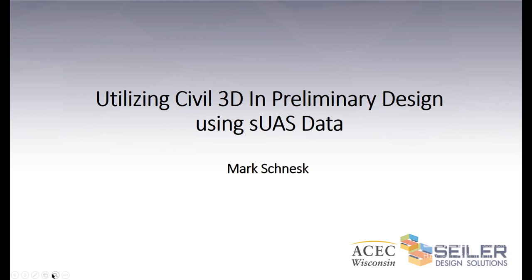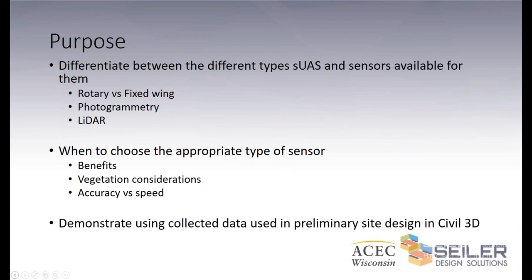In this session, we'll be utilizing Civil 3D in preliminary design using Small Unmanned Aerial System data. The purpose is to differentiate between the different types of Small Unmanned Aerial Systems and sensors available, including rotary versus fixed wing, photogrammetry sensor or LiDAR sensor — when to choose the appropriate type, the benefits of each, vegetation considerations, accuracy versus speed — and we'll demonstrate using collected LiDAR data in a preliminary site design in Civil 3D.